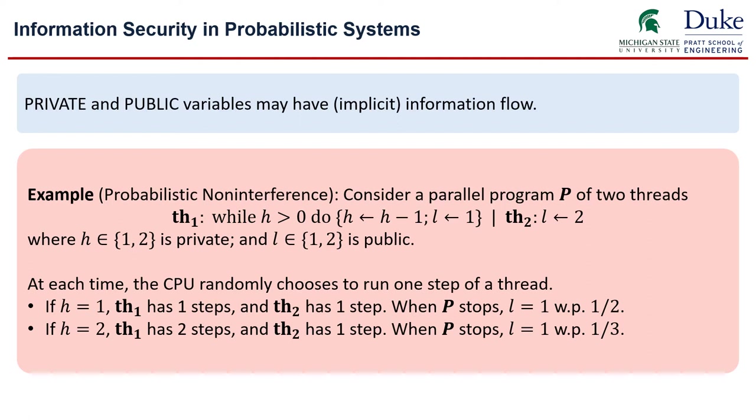Here is an example called probabilistic non-interference. Suppose we have a parallel programs of two threads in which there is a private variable h and a public variable l. Suppose we run this two thread parallel program on a CPU which choose to run one of these two threads for one step with equal probability. As you can see, depending on the value of the private variable, the way that the CPU execute these parallel programs will change accordingly, which will result in a change of the probability distribution of the value of the public variable.